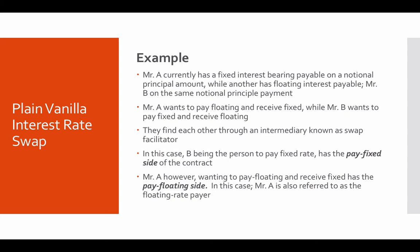Mr. A and Mr. B may or may not know each other, so they find each other through the help of a matchmaker or intermediary known as a swap facilitator. The swap facilitator creates the swap for Mr. A and Mr. B so they can transact on a periodic basis. Alternatively, if they approach a bank, they can each enter into a swap with the bank directly — Mr. A doesn't have to meet Mr. B.